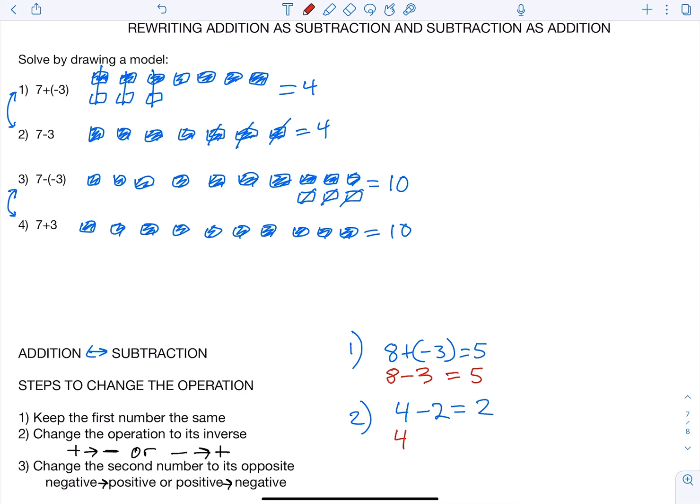Step 2, change the operation to its inverse. So the opposite of subtraction is addition. And then step 3, change the second number to its opposite. So we were subtracting positive 2. The opposite of positive 2 is going to be negative 2. So again, this is just a way that we could rewrite addition as subtraction or subtraction as addition.